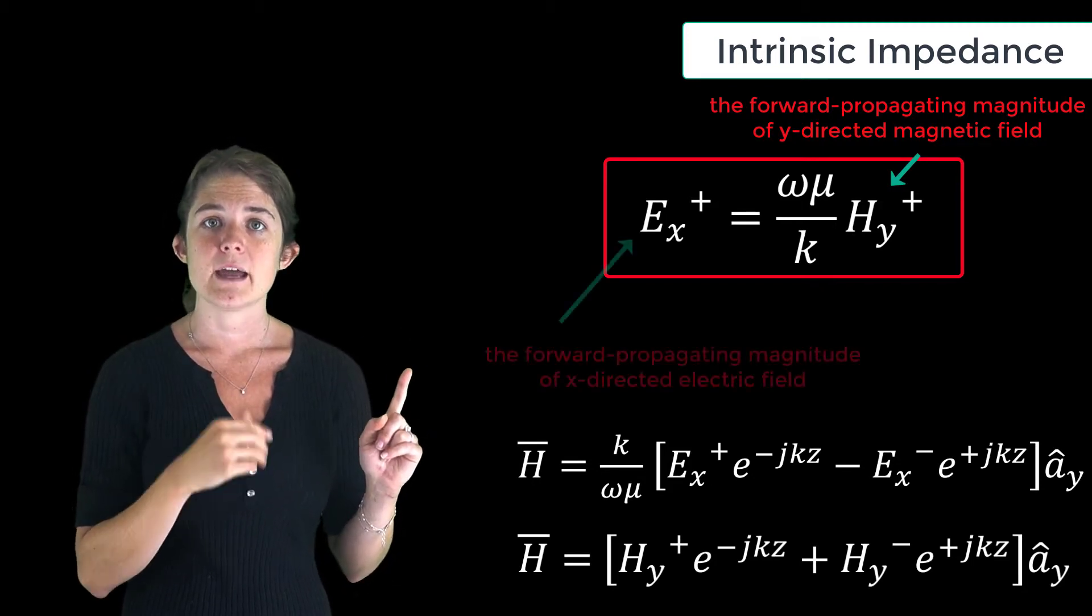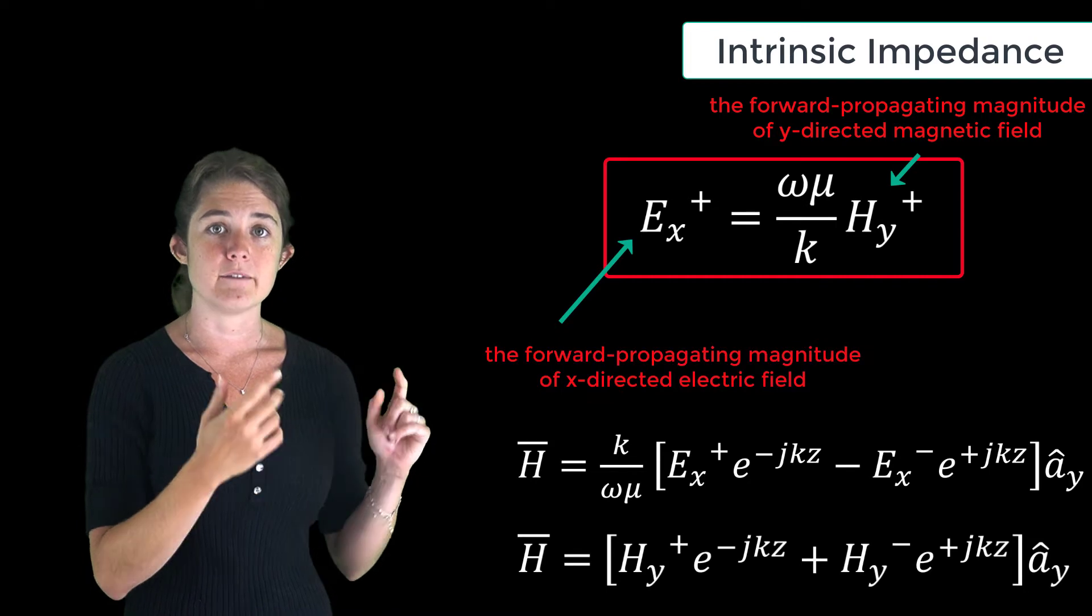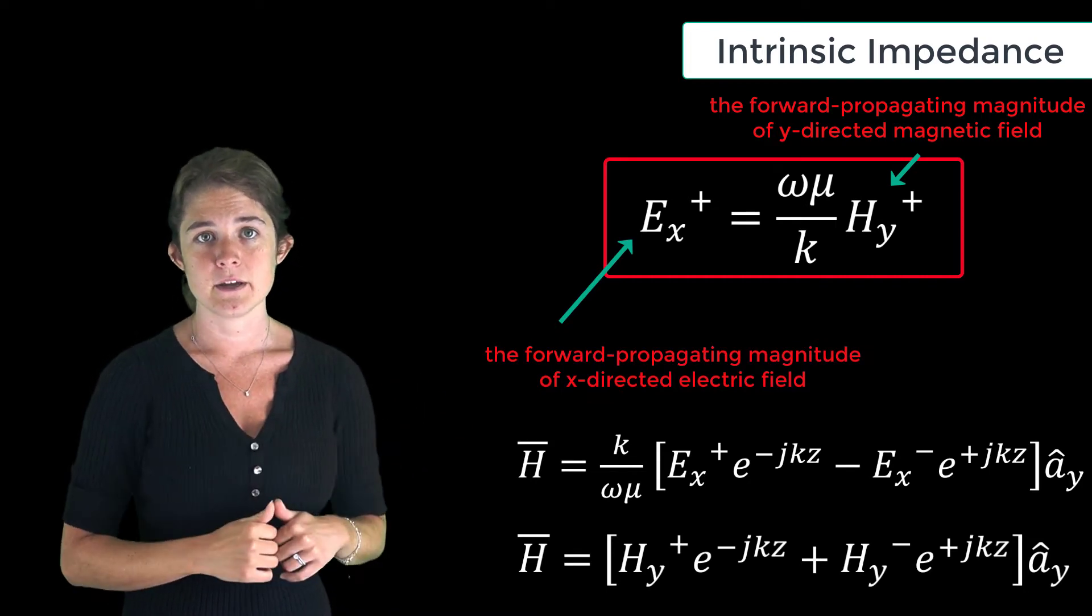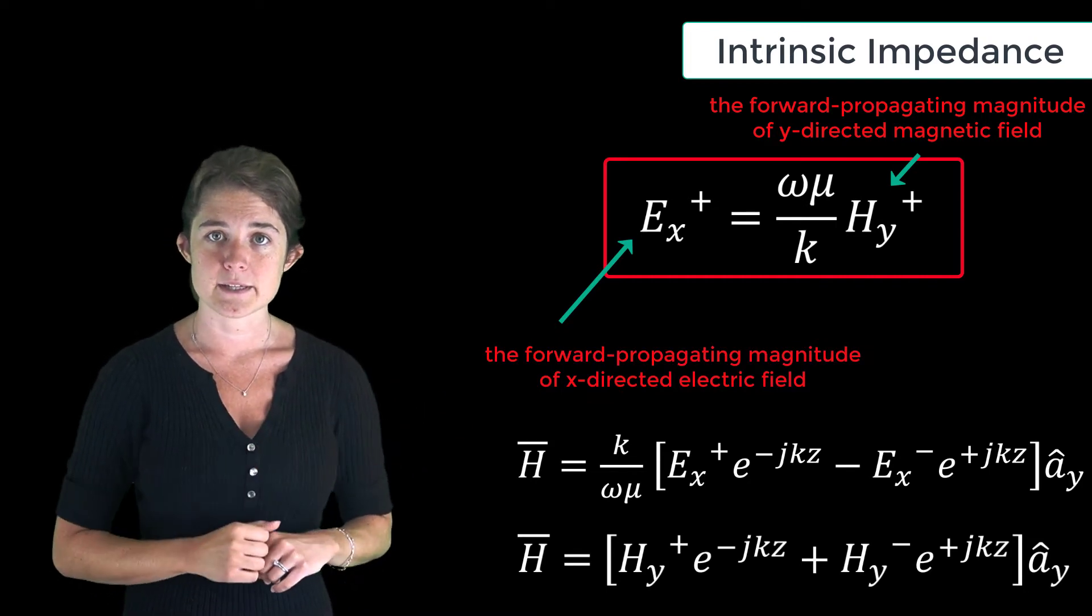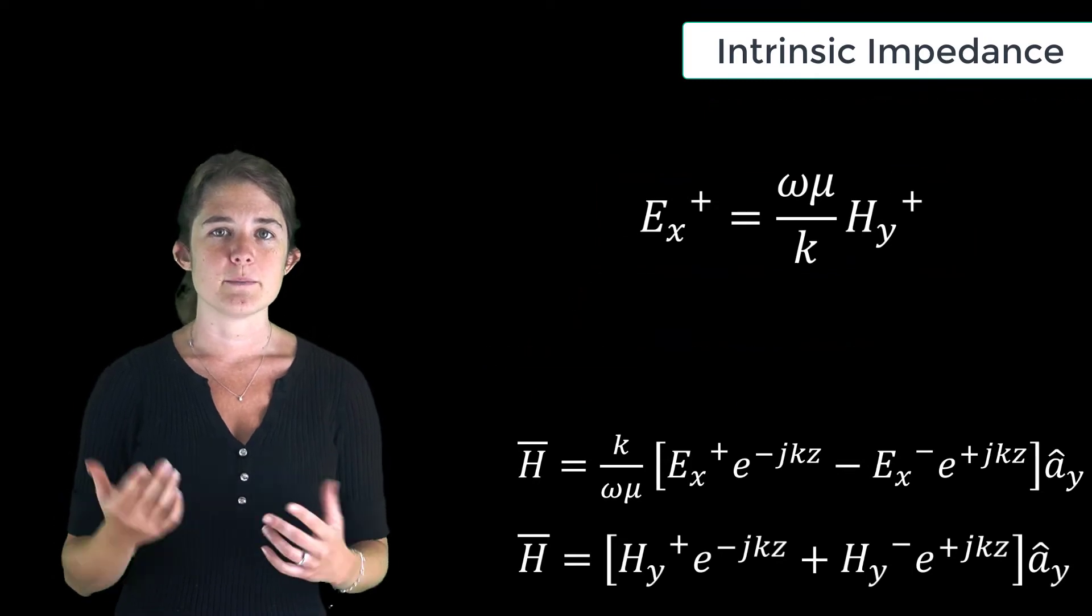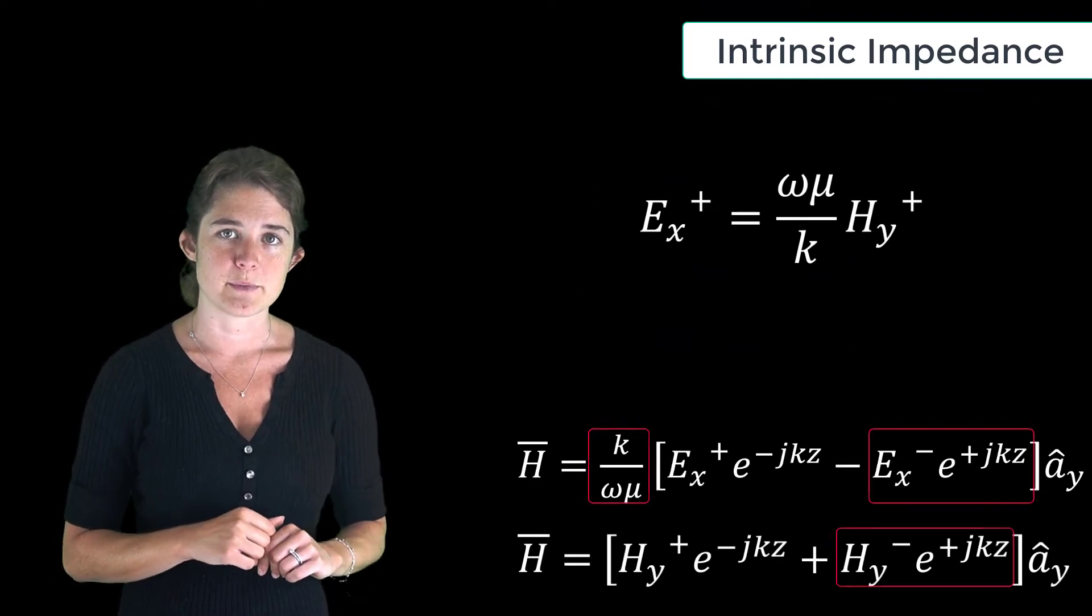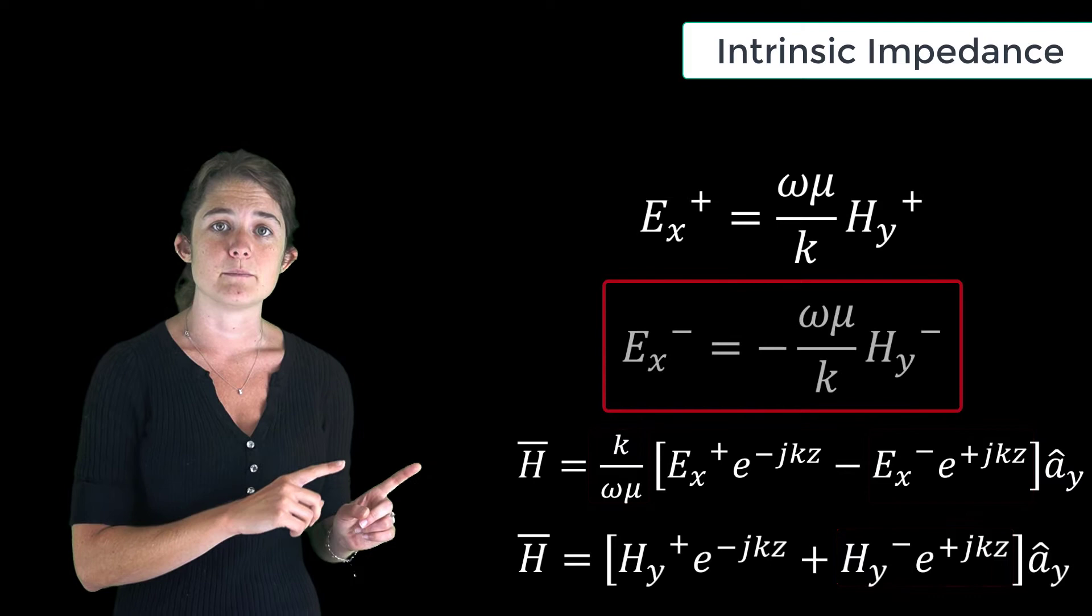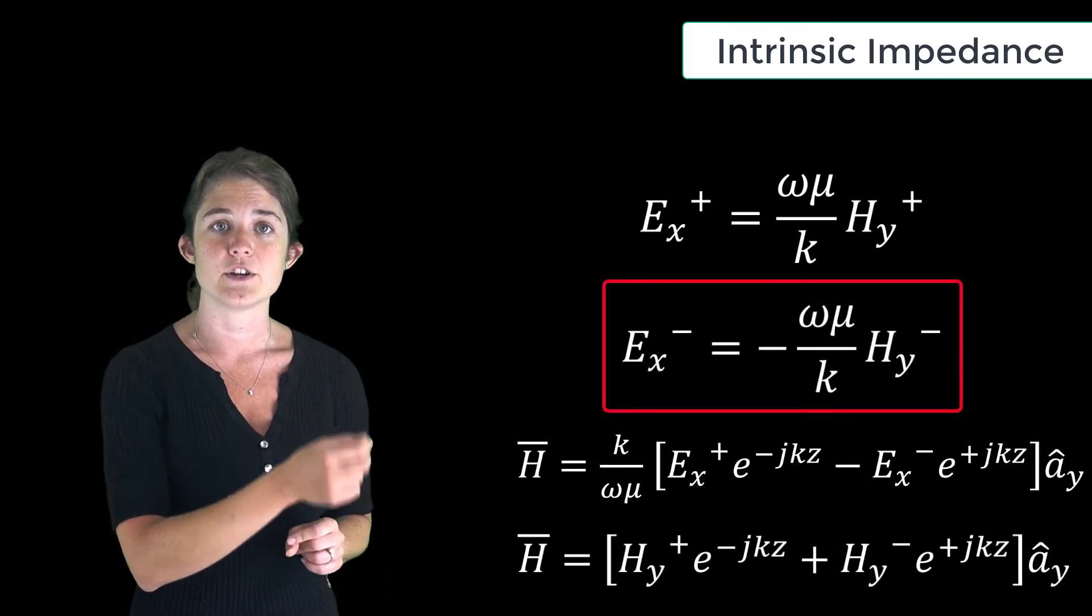We can also equate the backward propagating terms from both expressions to obtain this relationship between the backward propagating electric and magnetic field magnitudes.